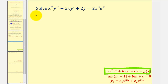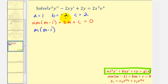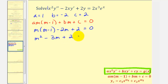We need to notice that a is equal to one, b is equal to negative two, and c is equal to positive two. So the auxiliary equation would be m times the quantity m minus one, and then since b is negative two, we'd have minus two m, and c is positive two. Now we'll solve: let's first clear the parentheses and then combine like terms, so we'll have m squared minus m minus two m, that's minus three m, plus two equals zero.